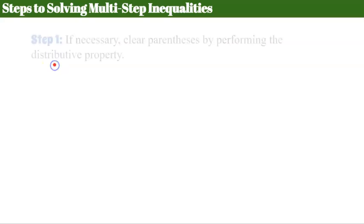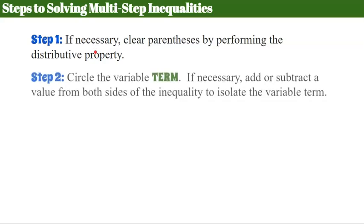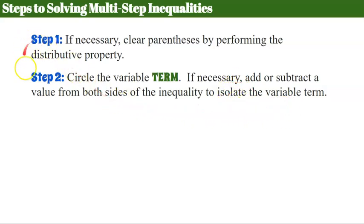There are four steps to solving multi-step inequalities. Step one: if necessary, clear parentheses by performing the distributive property. Step two: circle the variable term and if necessary add or subtract a value from both sides of the inequality to isolate the variable term. Reminding you that steps one and two may or may not be necessary.